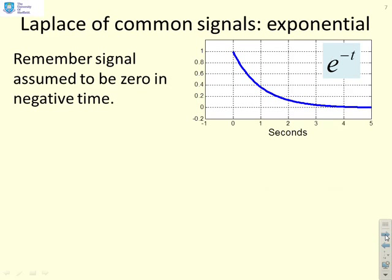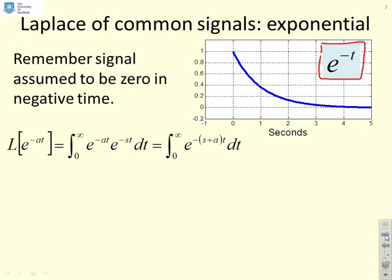The next common signal you might come across is an exponential. So here you'll see I've done e to the minus t, and again you'll notice I've only plotted it or defined it in positive time. So again, all I'm going to do if I want to do Laplace of a signal, something like e to the minus a t, is plug it into the formula. So there's the integral. The integral between 0 and infinity, e to the minus a t times e to the minus st dt.